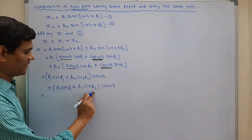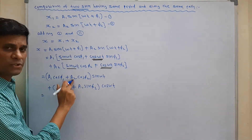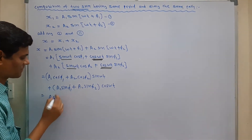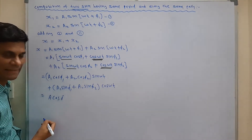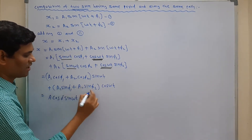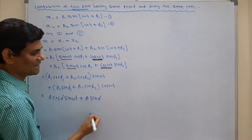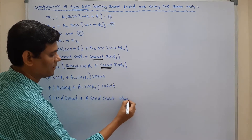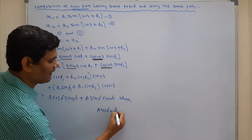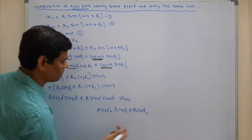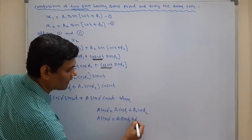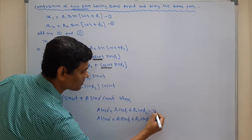Looking at these two brackets, we assume the resultant of amplitudes A1 and A2 is A, and the resultant initial phase angle of phi 1 and phi 2 is delta. So we define: A cos delta equals A1 cos phi 1 plus A2 cos phi 2 (equation 3), and A sin delta equals A1 sin phi 1 plus A2 sin phi 2 (equation 4).